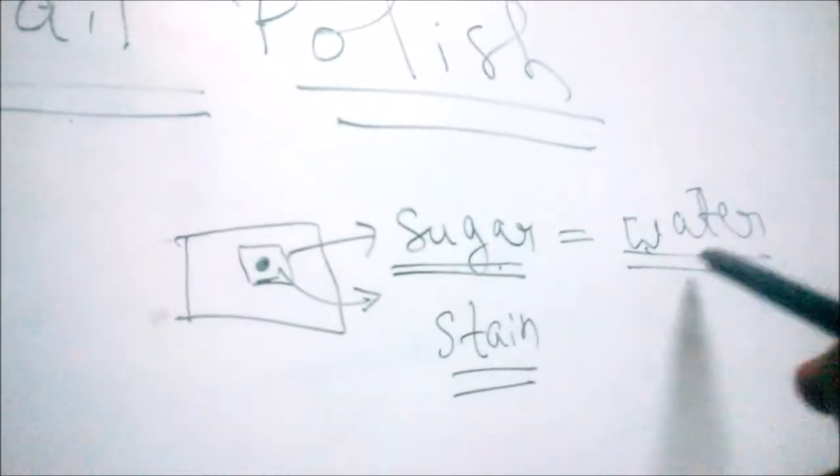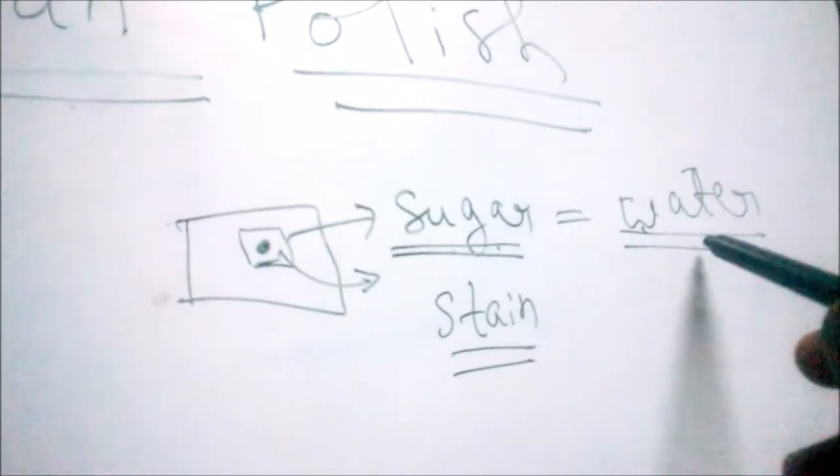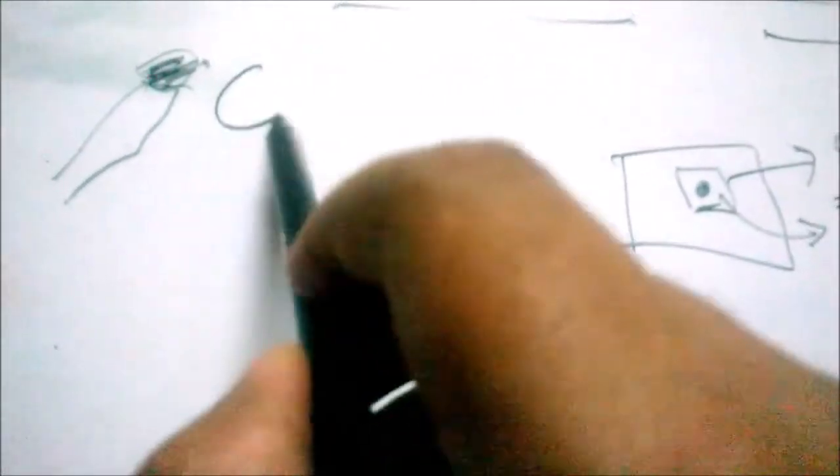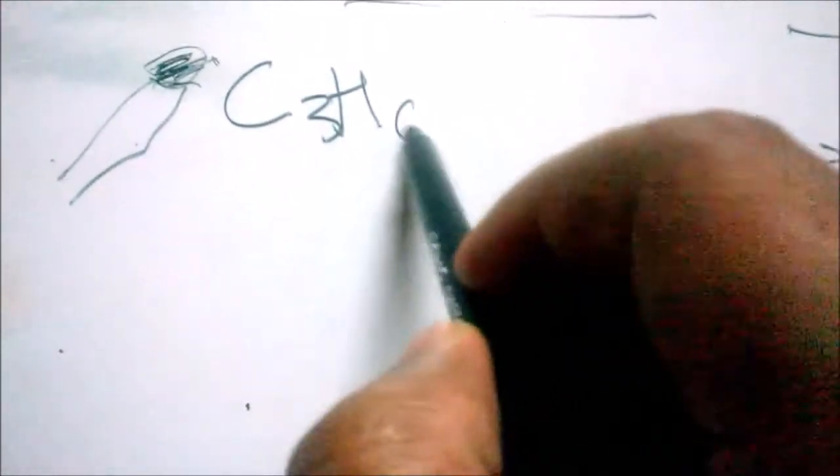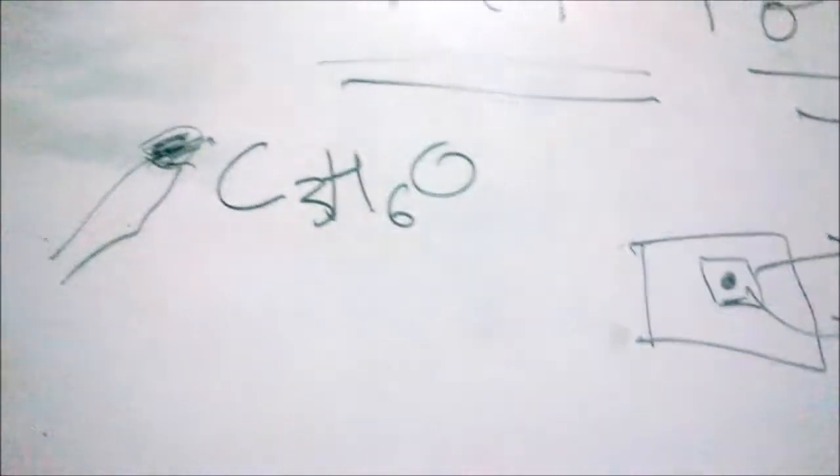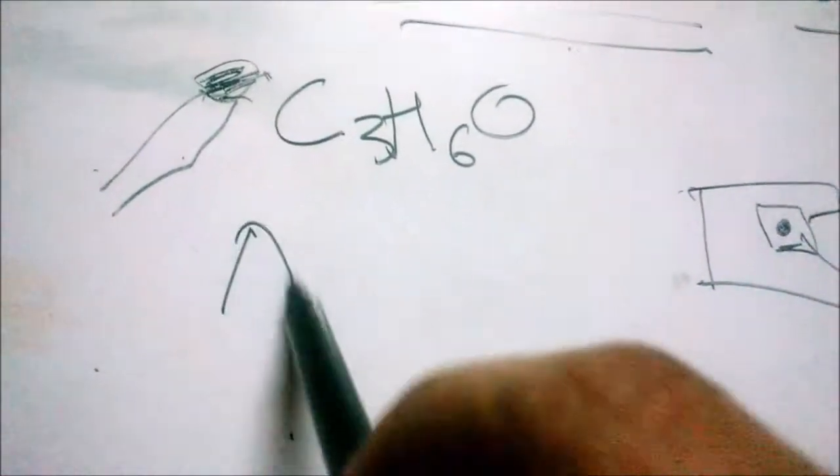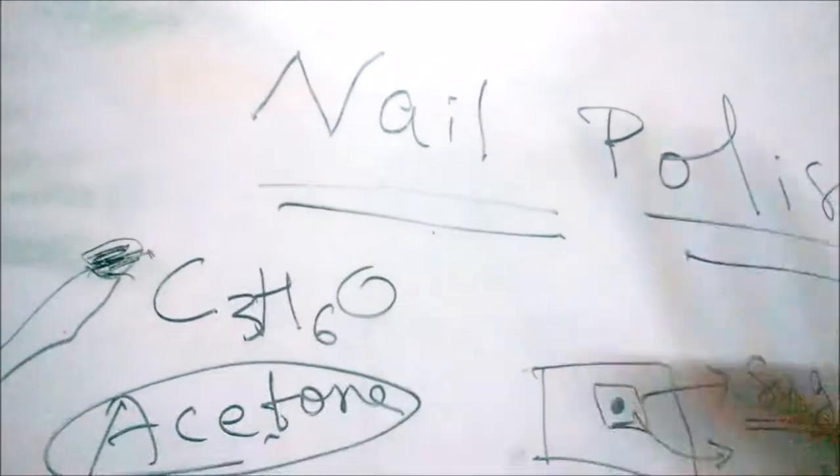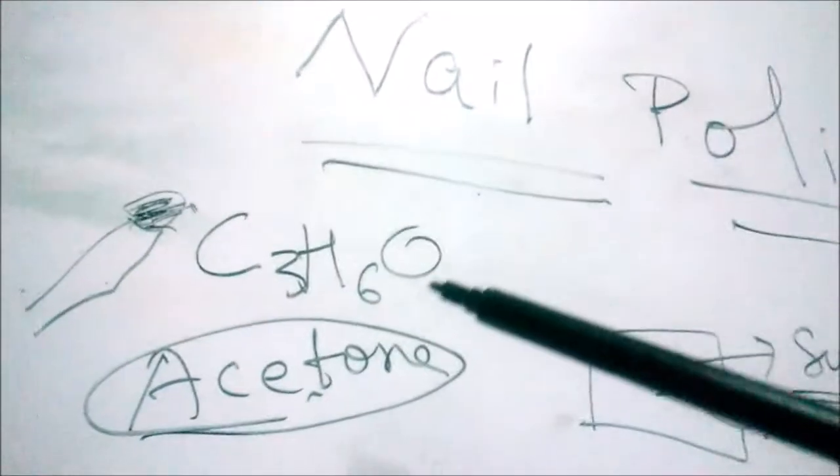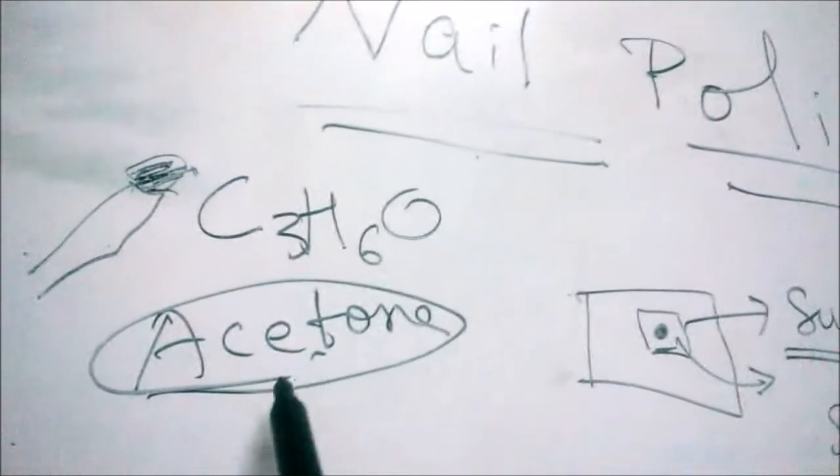So in this case we have C3H6O, that is acetone. Acetone will act as a solvent for our nail polish. The chemical structure of nail polish is such that it dissolves in acetone. We know that by experimentation we have found that out.